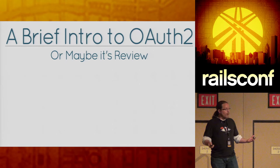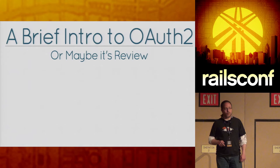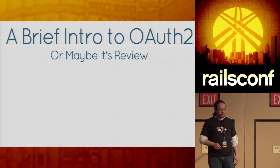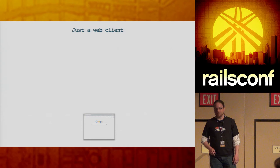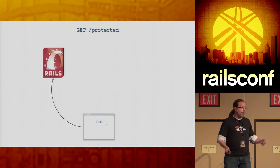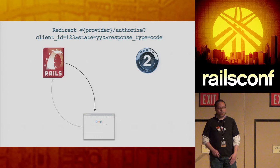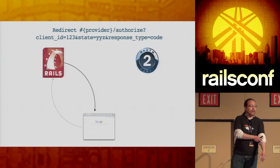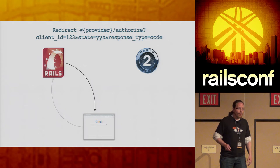A brief overview of how OAuth 2 works. This is a fairly simplified version of an OAuth request sequence. Say you've got a web client — just a browser — and they're going to try to access a page. They send a GET request to some protected resource on a Rails app. That Rails app says, you're not logged in, I don't know who you are. So it issues a redirect to an OAuth provider, saying: can you please authenticate this person and tell me who they are? The browser follows that redirect and goes to the provider.